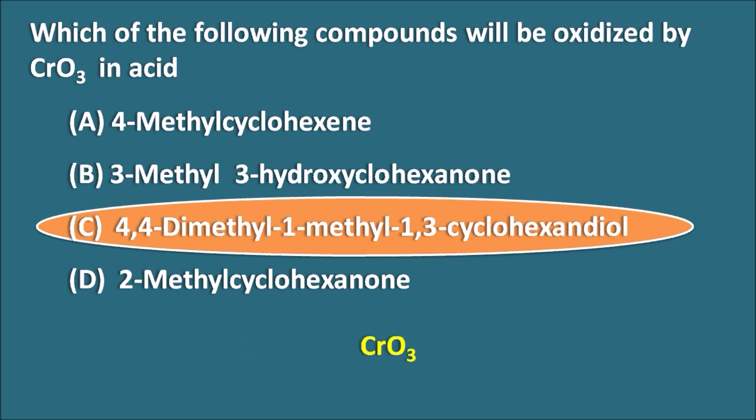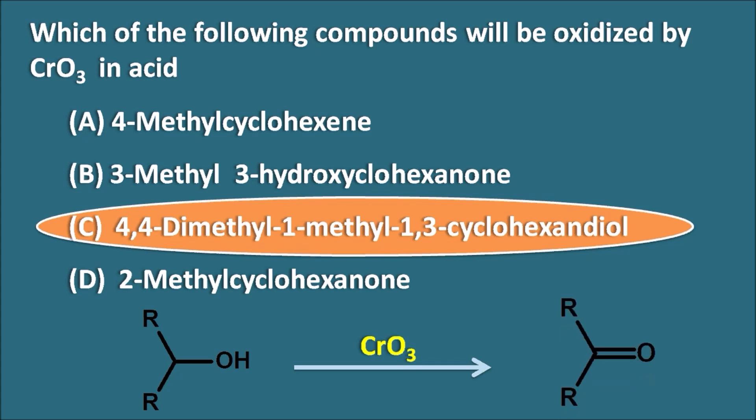Chromium trioxide acts as an oxidizing agent and can react with alcohols, converting them into ketones. These ketones can also be further converted into carboxylic acids by chromium trioxide. However, it does not oxidize alkenes and does not react with cyclic ketones. Option C is a cyclohexanediol, which is an alcohol that can be converted into the corresponding ketone, making it the correct answer.